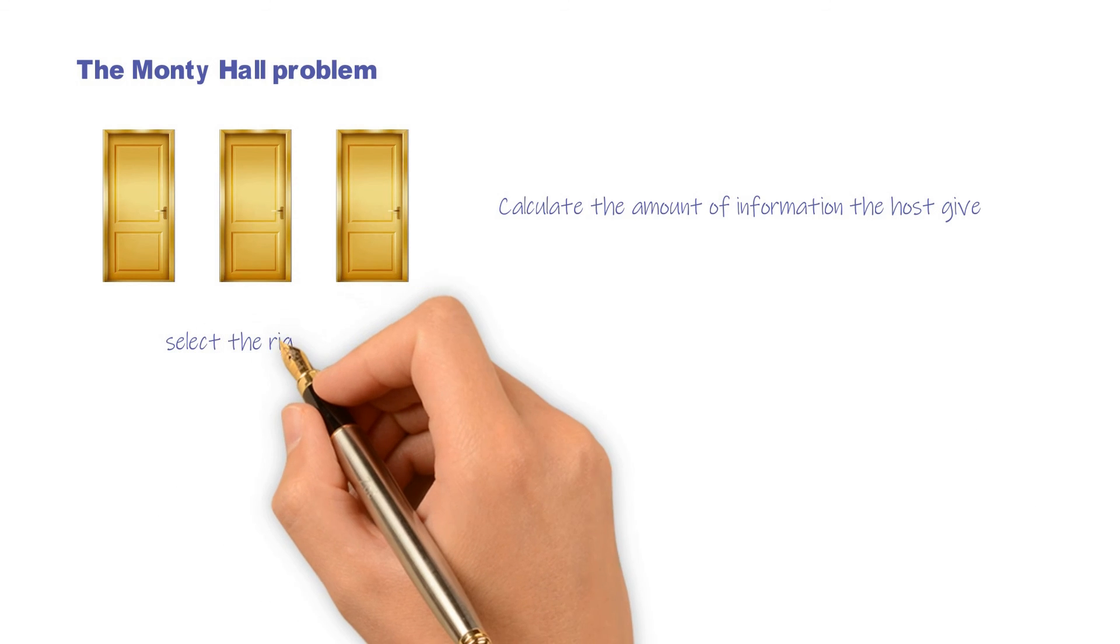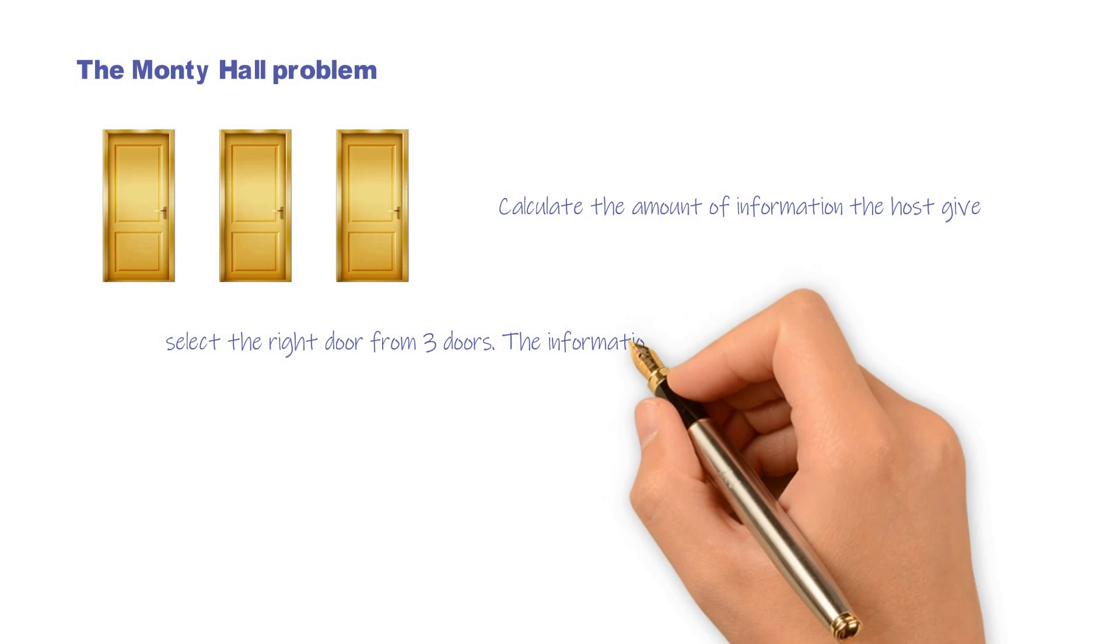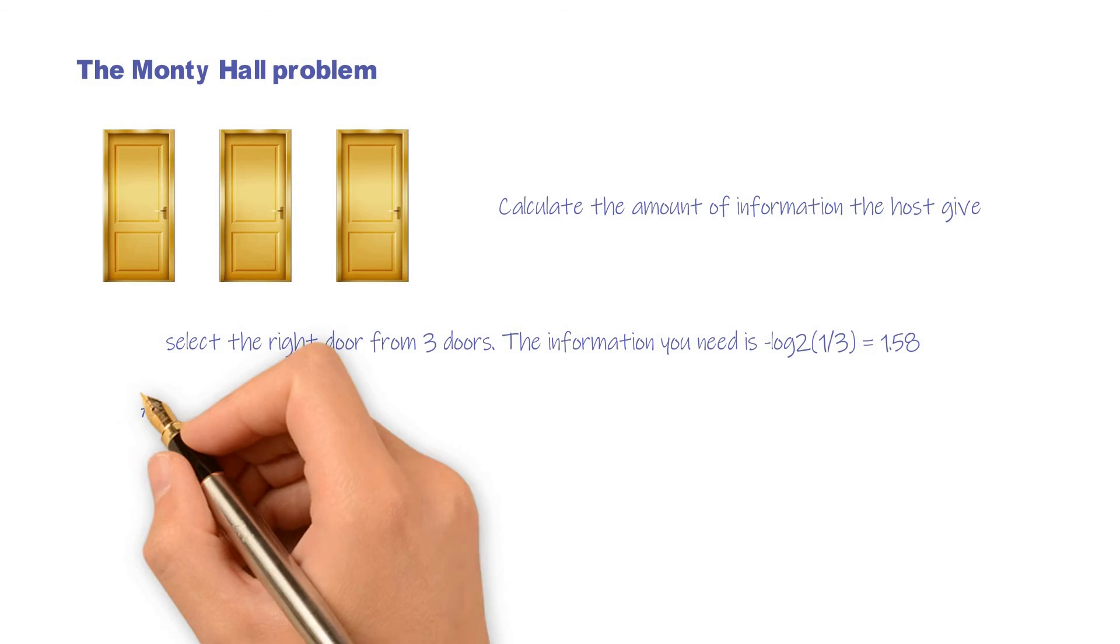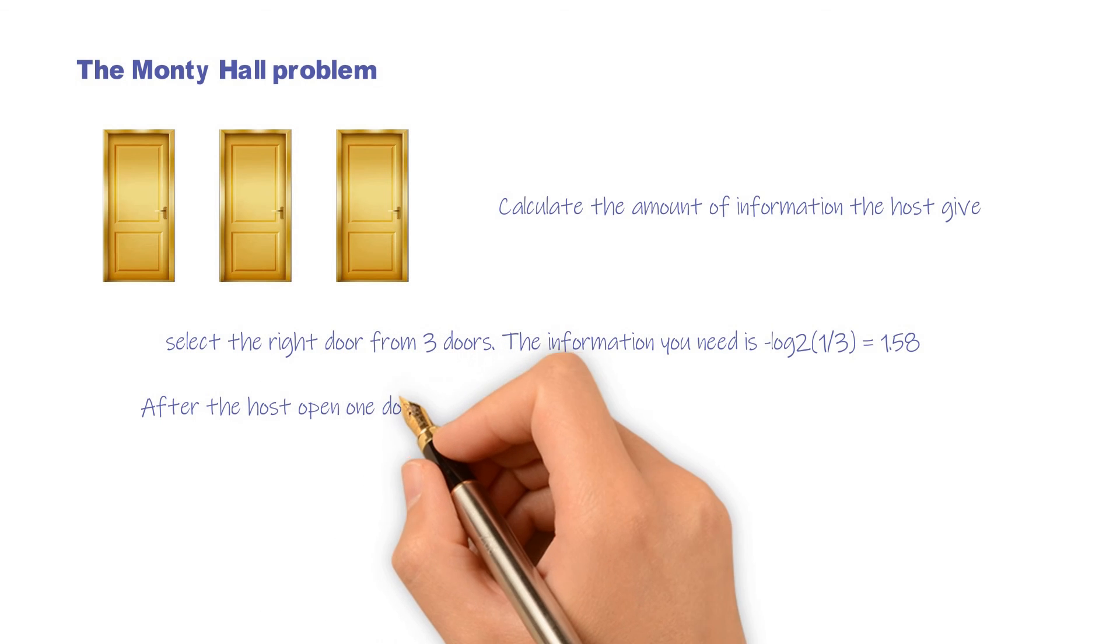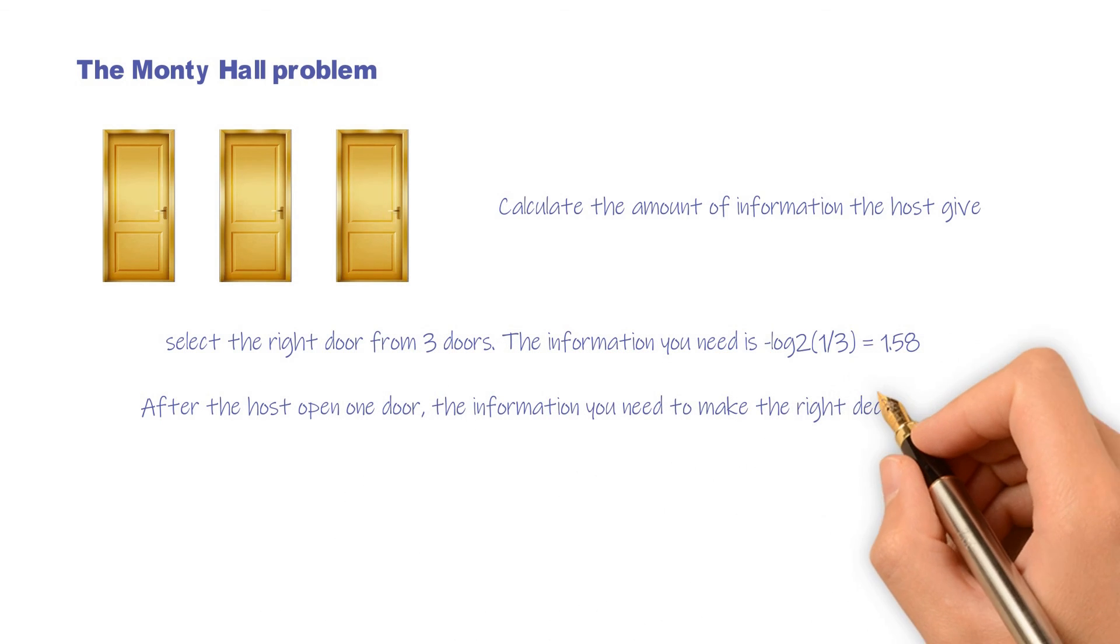In the beginning, you are supposed to select the right door from three doors. The information you need is 1.58 bit. After the host opens one door, the information you need to make the right answer is one bit. So the amount of information the host gives us equals 0.58 bit.